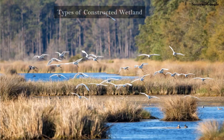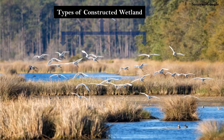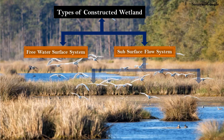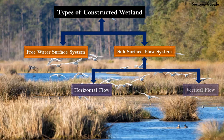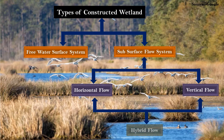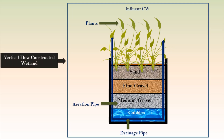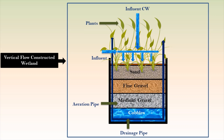Types of constructed wetlands are free water surface and subsurface flow systems, horizontal and vertical flow constructed wetlands, and hybrid flow constructed wetlands. Vertical flow constructed wetland is a wetland in which wastewater enters from the top of the wetland.